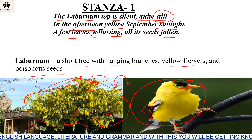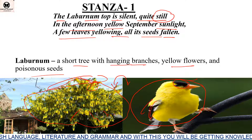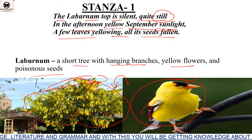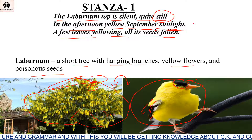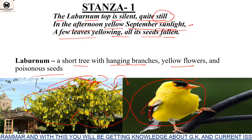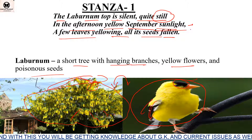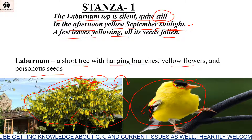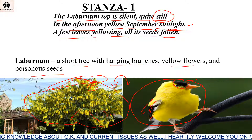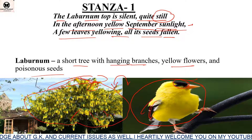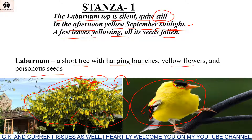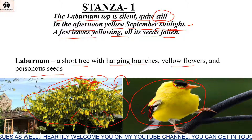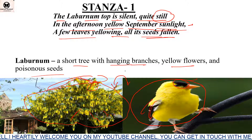In the afternoon yellow September sunlight — September was the time and especially in the afternoon the sunlight was most prominent. At that time this poem was composed. The poet observed that the tree was completely silent, its leaves were yellowing, and its seeds had fallen down.